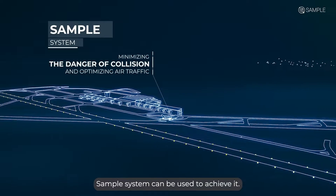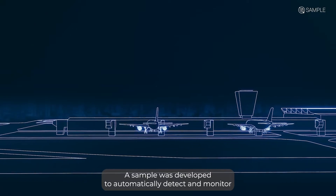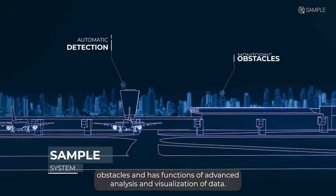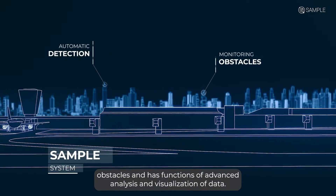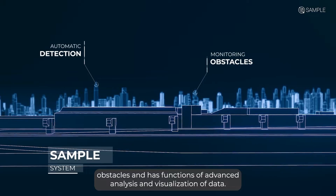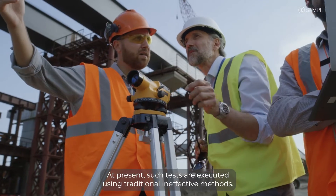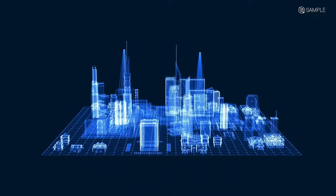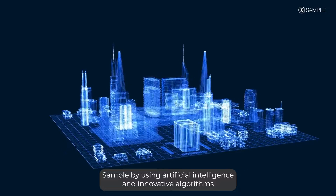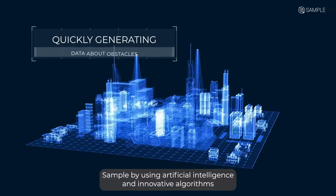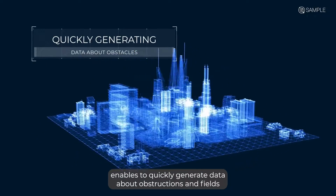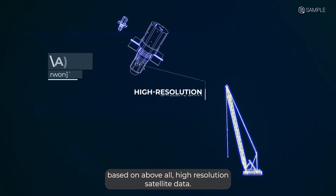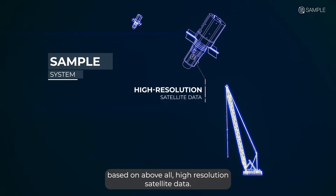The SAMPLE system can be used to achieve it. SAMPLE was developed to automatically detect and monitor obstacles and has functions of advanced analysis and visualization of data. At present, such tasks are executed using traditional, ineffective methods. SAMPLE, by using artificial intelligence and innovative algorithms, enables to quickly generate data about obstructions and field based on, above all, high-resolution satellite data.